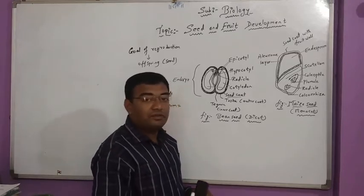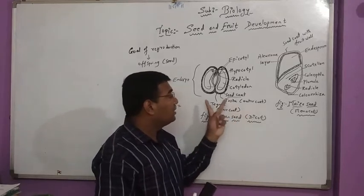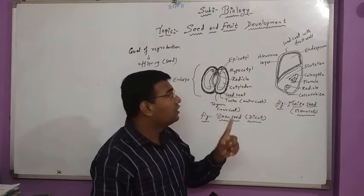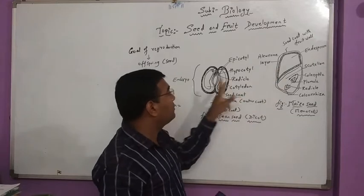Overall when we see about the seed differences, there is a development of two cotyledons in dicot and in monocot there is a development of a single cotyledon. Endosperm is present in both.